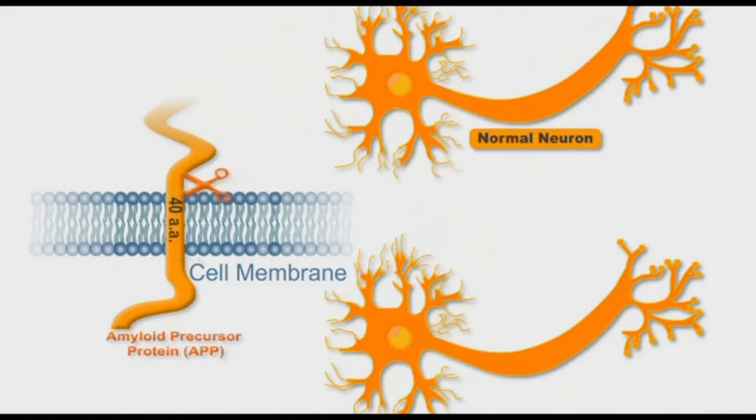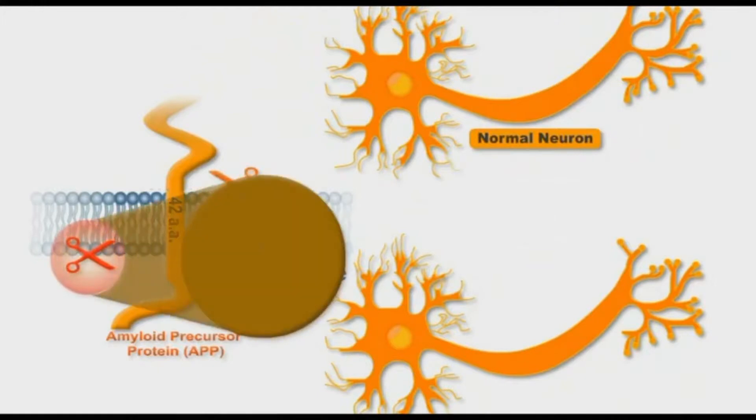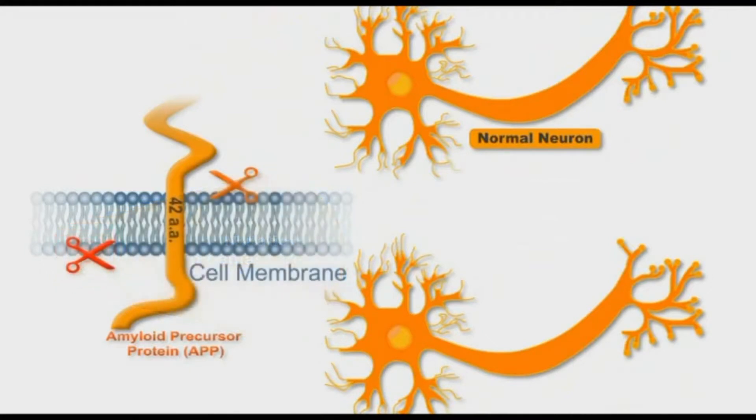Similar situations occur if the new fragments produced are 40 amino acids long. However, sometimes and for unknown reasons, a mutation occurs in the gamma secretase enzyme. This mutation results in the production of 42 amino acid peptide fragments.